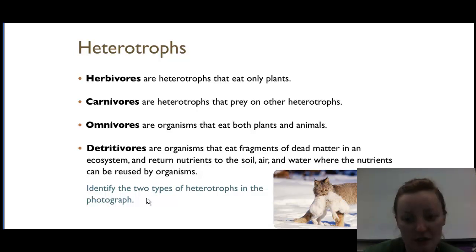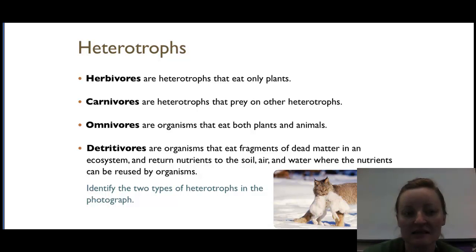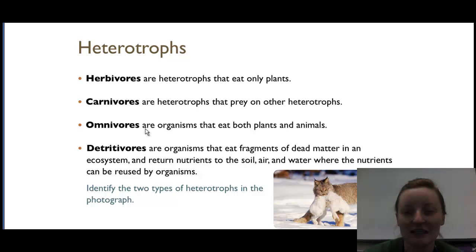In the picture shown, we have an unfortunate-looking bunny and a cat-like heterotroph called a lynx. Is the lynx a herbivore, carnivore, omnivore, or detritivore? And the rabbit — is it a herbivore, carnivore, omnivore, or detritivore? The lynx caught the bunny while it was alive, so based on the picture, the lynx is definitely a carnivore. From prior knowledge, we can assume the rabbit is a herbivore.